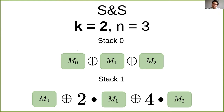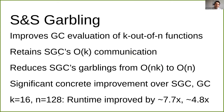These simple stacking operations are far cheaper than the garbling operations. As a result, we obtain performance that matches the computation of the standard Yao's garbled circuit approach and the communication of stack garbling. The key contribution is that we improve garbled circuit evaluation of k out of n functions where the k choices are known to the garbled circuit evaluator. We retain stack garbling communication complexity while simultaneously retaining the computation complexity of the standard garbled circuit approach. Thank you for listening, and I'm happy to answer any questions.